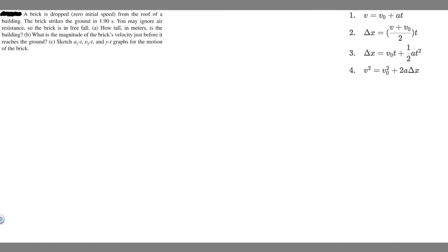In this problem, a brick is dropped with zero initial speed from the roof of a building. The brick strikes the ground in 1.9 seconds. You may ignore air resistance, so the brick is in free fall. Part A: how tall in meters is the building? Part B: what is the magnitude of the brick's velocity just before it reaches the ground?